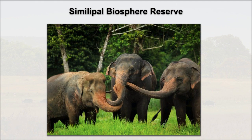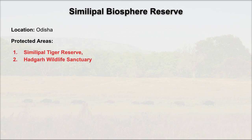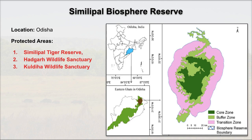Next is Simlipal Biosphere Reserve. The key fauna is the Asian Elephant. Simlipal is located entirely in Odisha. The protected areas are Simlipal Tiger Reserve, Hadgarh Wildlife Sanctuary, and Kuldiha Wildlife Sanctuary. In the zoomed-in map you can also see the core, buffer, and transition zones — the three zones of a biosphere reserve.